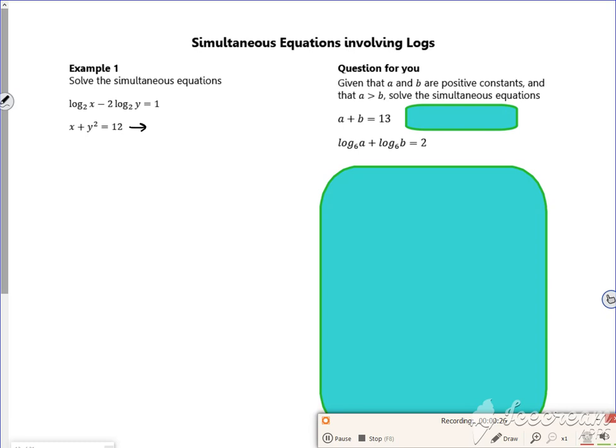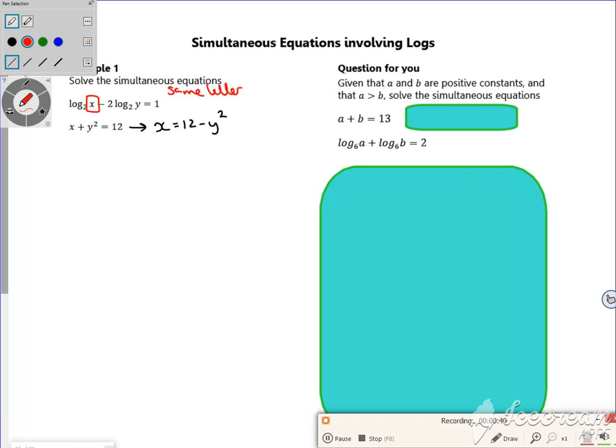I think you've got many different ways, but you want to sub one into the other, don't you? Whenever you're solving simultaneous equations, so that's what we're going to do. So I'm going to change this x, because we want it all in the same letter so we can solve it easier. I'm going to change this x into 12 minus y squared.